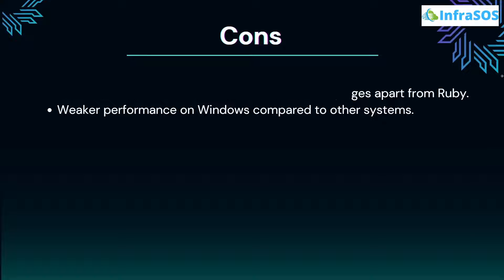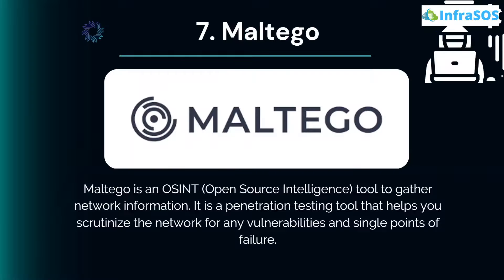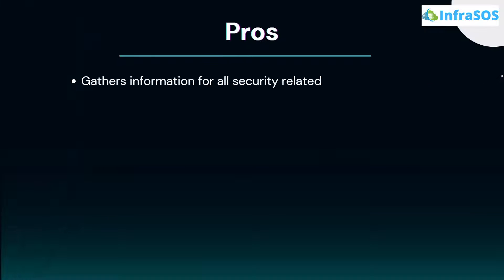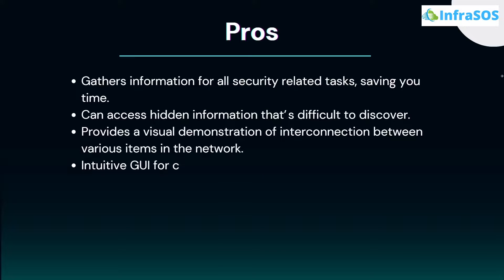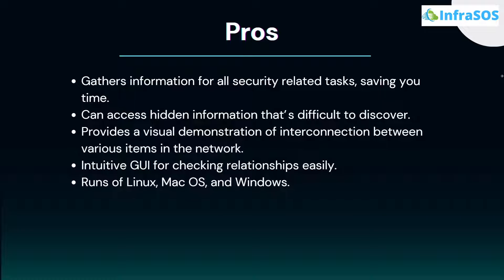Number 7 on our list is Maltego. Maltego is an OSINT tool — Open Source Intelligence — used to gather network information. It is a penetration testing tool that helps scrutinize the network for vulnerabilities and single points of failure. Major pros include that it gathers information for all security-related tasks saving time, can access hidden information, provides a visual demonstration of interconnections between various items in the network, and has an intuitive GUI for checking relationships easily.